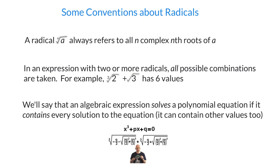It's not really clear how you're supposed to combine multi-valued expressions when you have more than one in an expression. So we take the most expansive possible convention: you're allowed to make any possible choice you want. For example, cube root of two plus square root of three — you have three choices here and two choices here, so you take all of them, giving six values. Because of that expansiveness, we'll say an algebraic expression solves a polynomial equation if it contains every solution, even if it might contain some other stuff too.